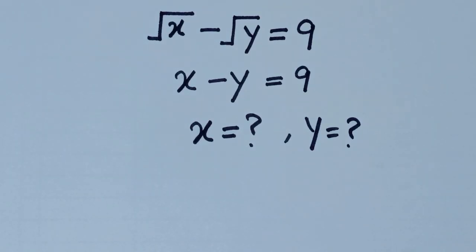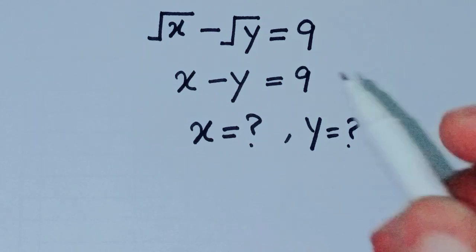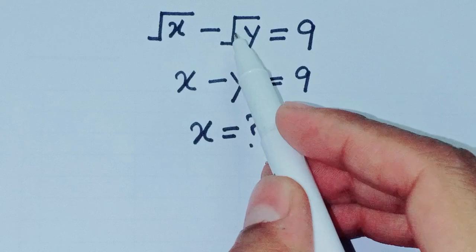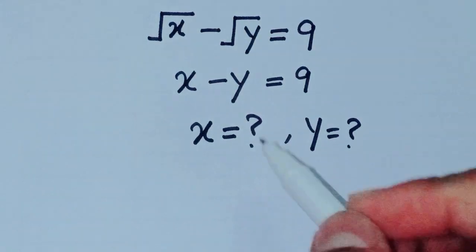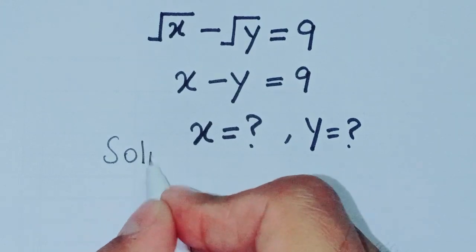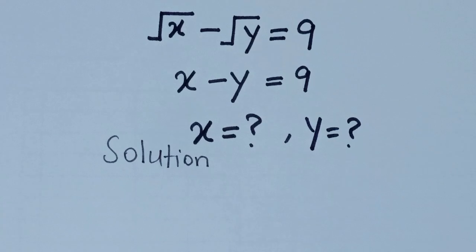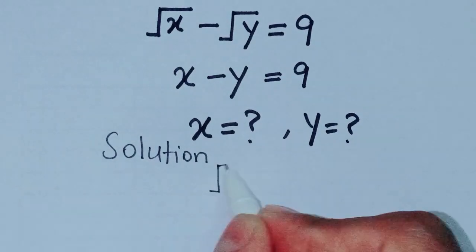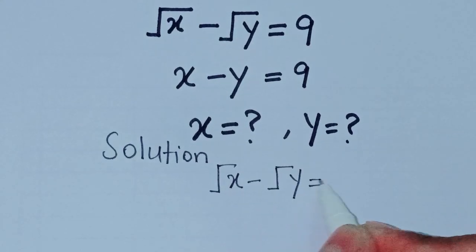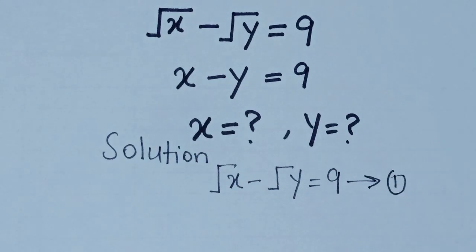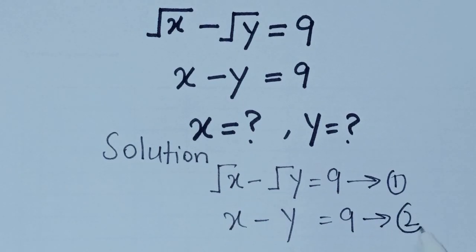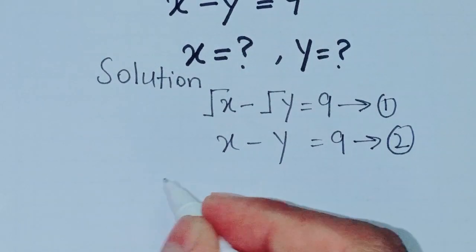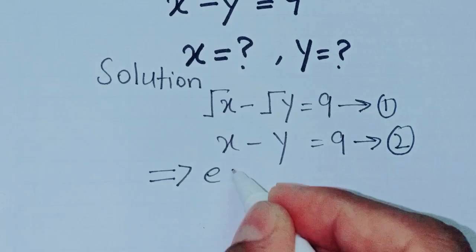Assalamualaikum, welcome everyone. Today I am going to show how to solve two equations to find the value of x and y. The two equations are: square root of x minus square root of y is equal to 9 — this is equation 1 — and x minus y is equal to 9 — this is equation 2.